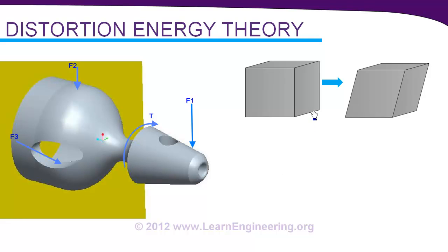And according to distortion energy theory the culprit behind failure is distortion means shape change. This is mainly because of intermolecular slip in material. And as the name suggests this theory is related to energy, energy of distortion. And you know if you want to deform this material from this shape to this shape you should supply some energy to it. And that energy is known as distortion energy.